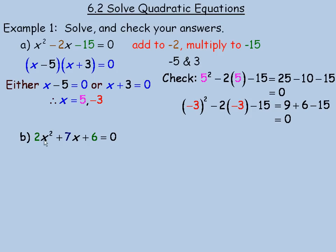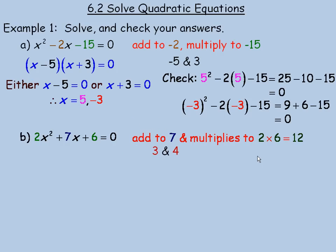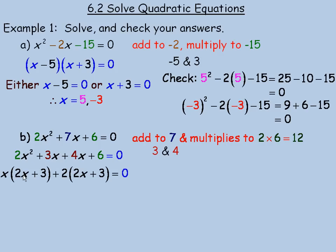Moving to example b: to factor 2x squared plus 7x plus 6, we find two numbers that add to 7 and multiply to the product of 2 and 6, which is 12. Those numbers are 3 and 4. We break the 7x term into 3x and 4x, then common factor x out of the first two terms to get x(2x plus 3), and factor 2 out of the last two terms to get 2(2x plus 3). The common factor (2x plus 3) is factored out, giving (2x plus 3)(x plus 2).